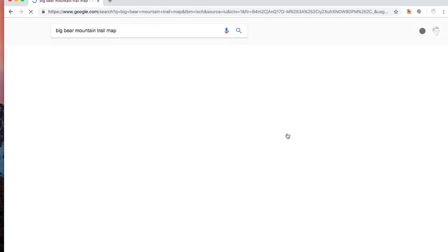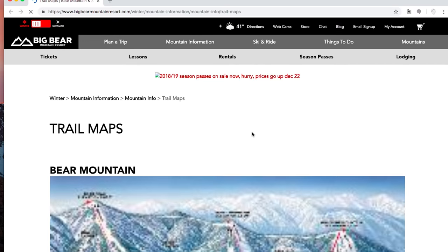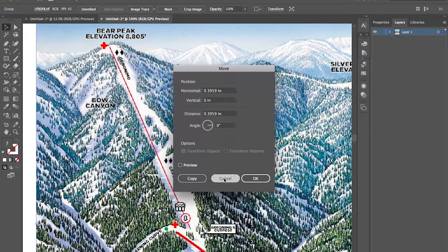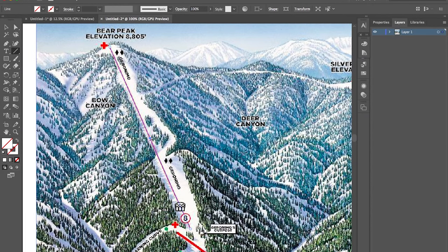Before I dive into the build I wanted to just briefly show you how I designed this. I found a high-res picture of the Big Bear map I wanted to trace and brought it into Illustrator and sized it up to the scale at which I wanted to build my project at.